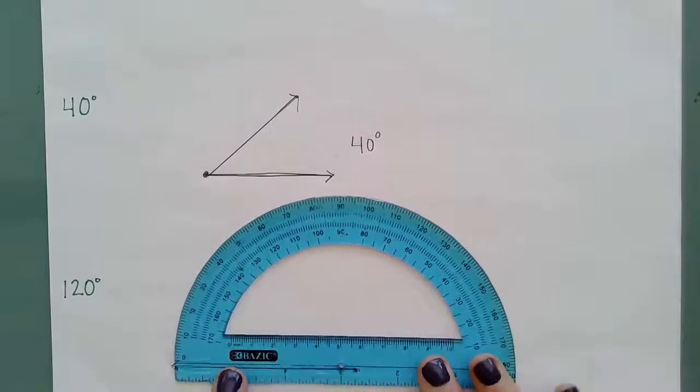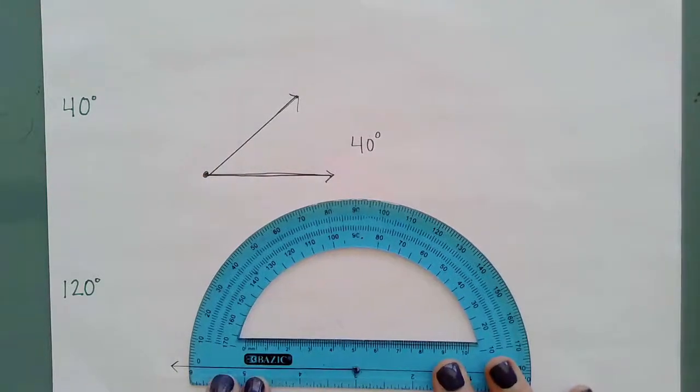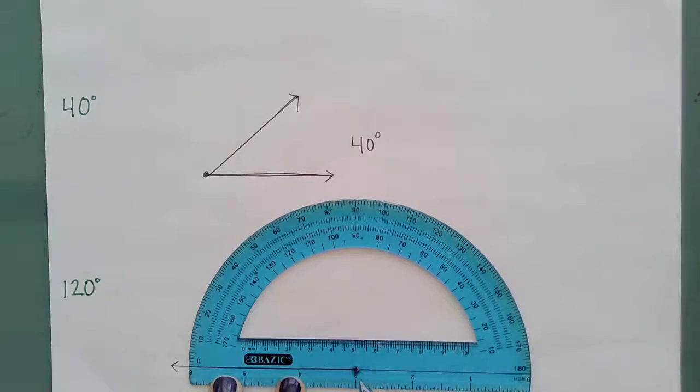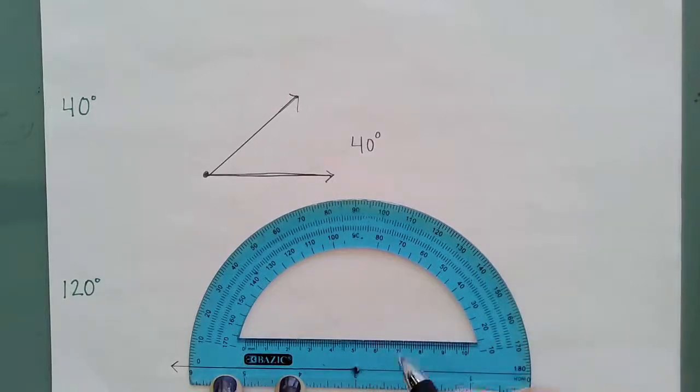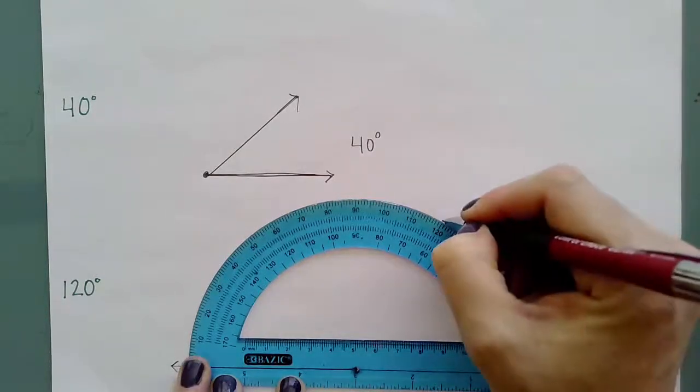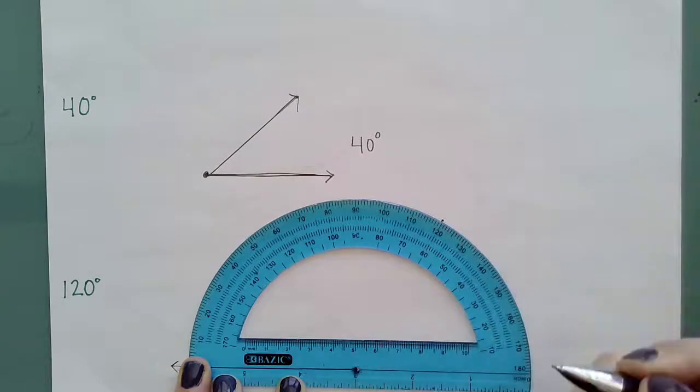So I'm going to line up my ray with my zero edge and then line up my dot here with my center mark. And then I'm going to look over here for the 120 and just put a dot above 120.